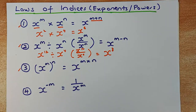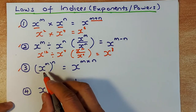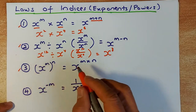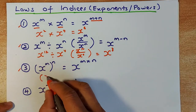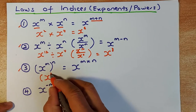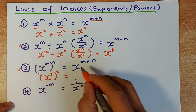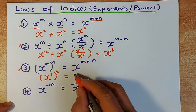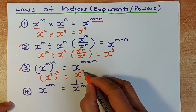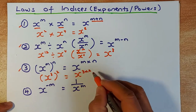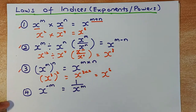Law 3 is more useful in Level 2: x to the m, raised to the power of n. For example, x cubed to the power of 2 — you multiply the powers, so it's x to the power of 3 multiplied by 2, which gives you x to the power of 6.